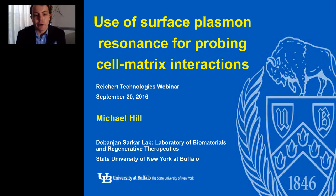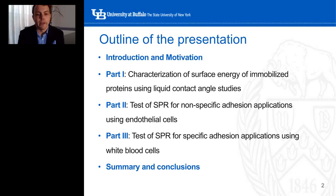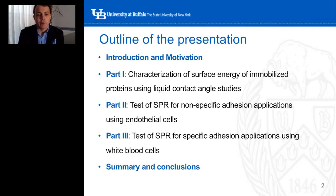Hello, and thank you for joining me for today's webinar. On behalf of Reichert Technologies, I'm presenting the use of surface plasmon resonance, SPR, for probing cell matrix interactions. We'll begin with a brief introduction and a discussion of our motivation in these studies, followed by part one: characterization of the surface energy of immobilized proteins using liquid contact angle studies. Part two: a test of SPR for a non-specific adhesion application using endothelial cells. And part three: a test of SPR for a specific adhesion application using white blood cells, followed by our summary and concluding remarks.